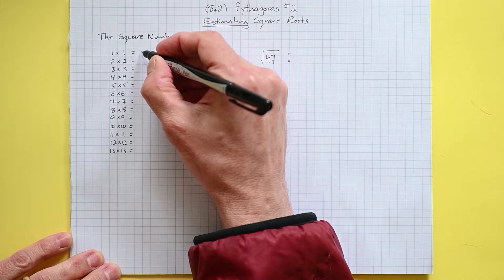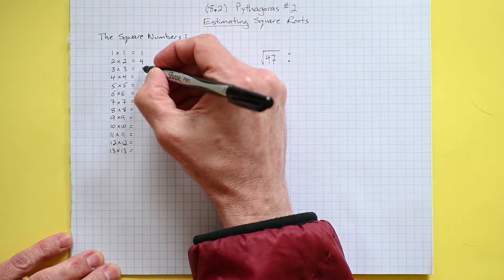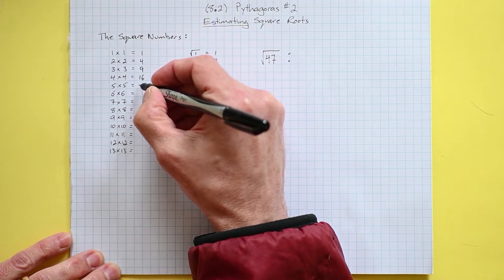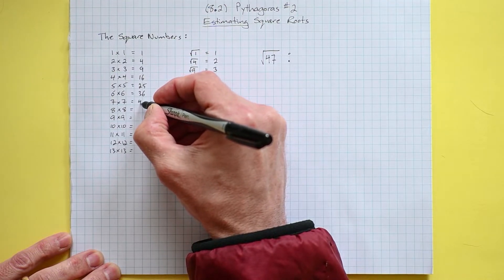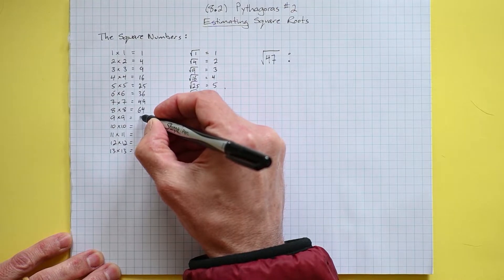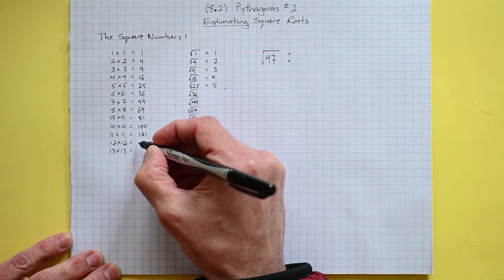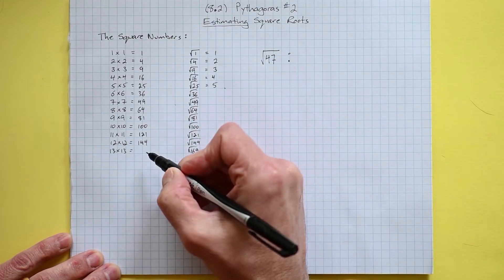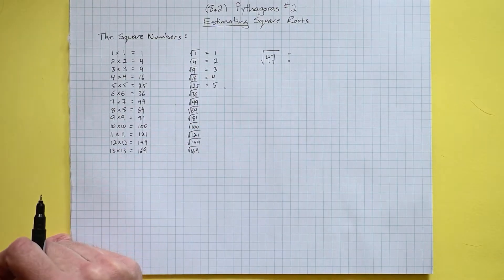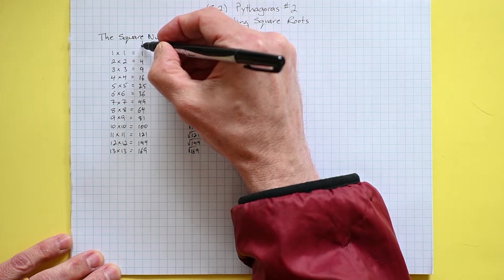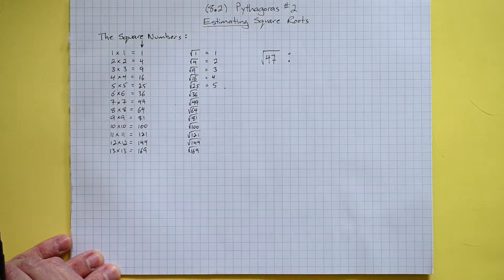So see if you can predict these with me: 1 times 1 is our first square number and has a value of 1, 2 times 2 is 4, then 9, 16, 25, 36, 49, 64, 81, 100, 121, 144, and yes, 169. So these are the square numbers in this list here.